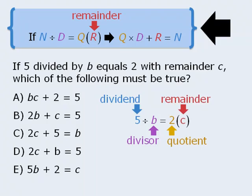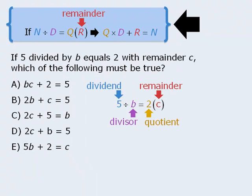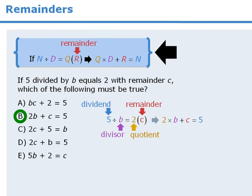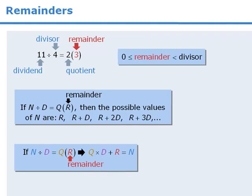From here, we can apply this rule to conclude that 2 times b plus c must equal 5, which means the answer here is b. Let's summarize. In this lesson, we learned some important skills for tackling remainder questions.